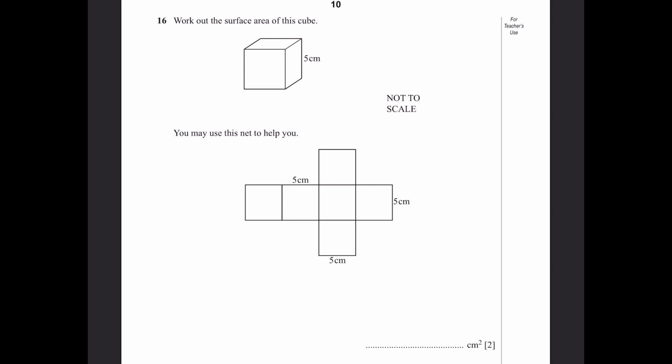Question 16. Work out the surface area of this cube. If this is a cube, all of the sides are 5 centimeters. You can use a formula: the surface area of a cube is 6 into side squared. The side squared is the area of one face, and there are six faces. The side is 5 centimeters. 6 into 5 squared equals 6 into 25, which equals 150 centimeters squared. That's the answer.